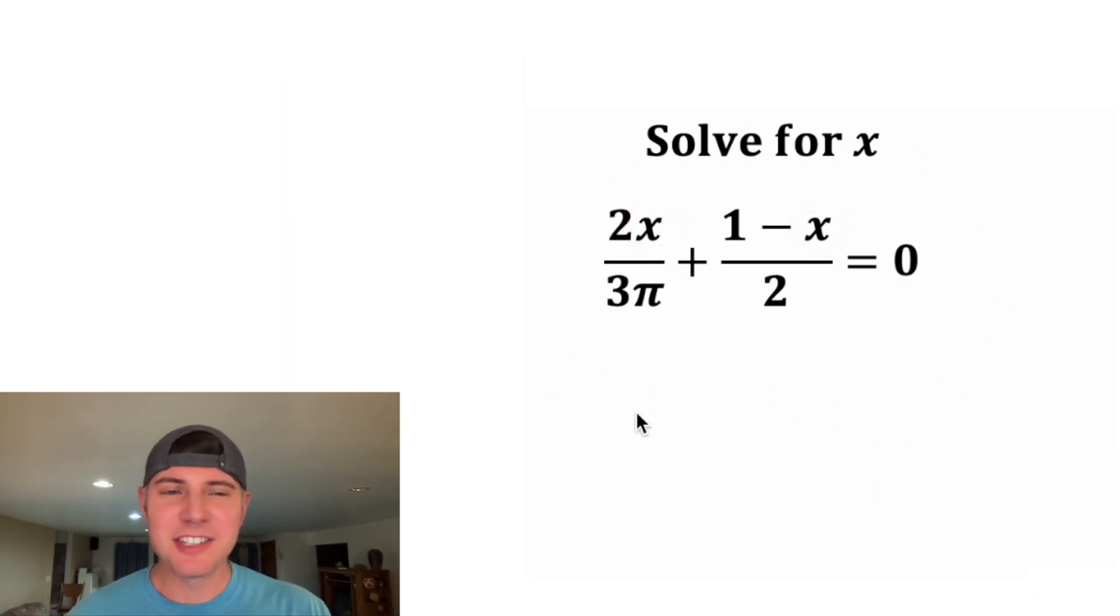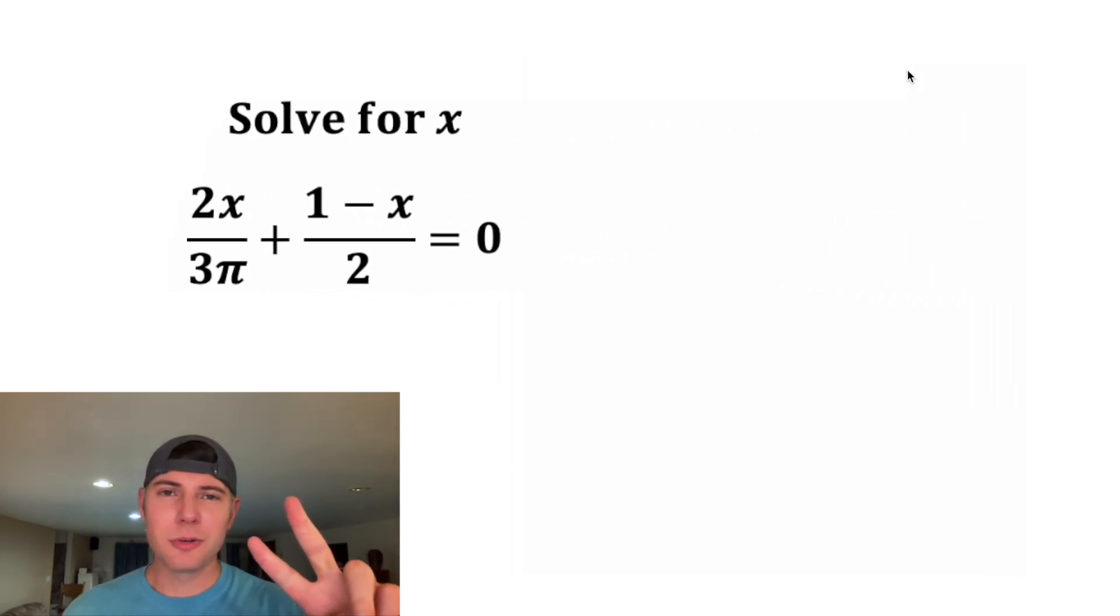Hey guys, this looks like a fun one. It says solve for x. It's 2x over 3π plus the quantity 1 minus x over 2 equals 0. If you want to try it on your own, pause it right now, because I'm going to solve it in 3, 2, 1.